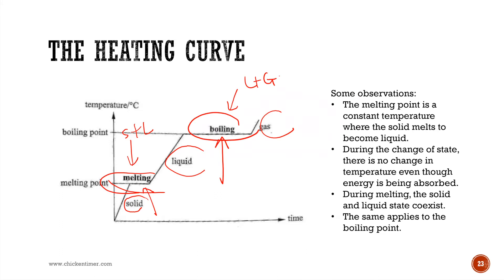From the heating curve, you need to identify the melting point and the boiling point. During melting, solid and liquid coexist together. During boiling, liquid and gas coexist together. Questions may ask which part of the graph corresponds to the solid, liquid, or gas state, and what the melting and boiling points of the substance are.